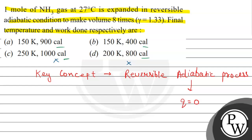The final answer: the final temperature is 150 Kelvin and the work done is 900 calories. Option A is the final answer. Hope you understood it well. Best of luck.